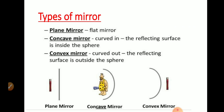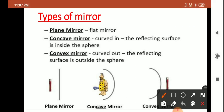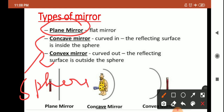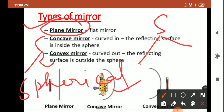Now mirrors — if we talk about them, they are also having varieties. Basically we have two types of mirror. Number one is your plane mirror, and the other type is your spherical mirror. And this spherical mirror is again divided into two parts, that is your concave mirror and convex mirror.